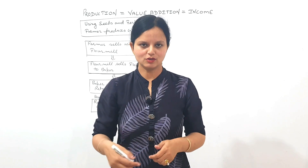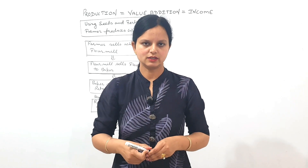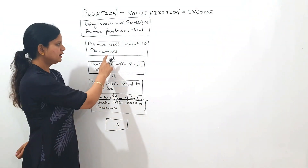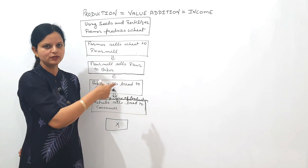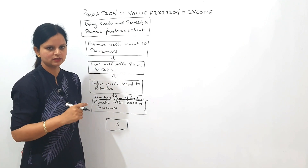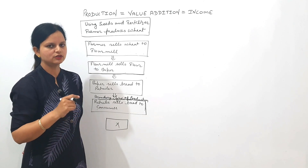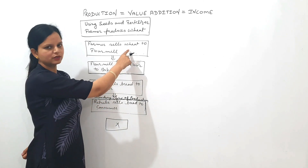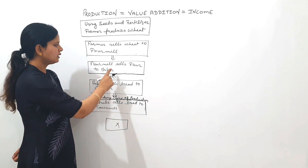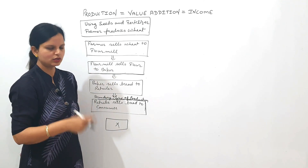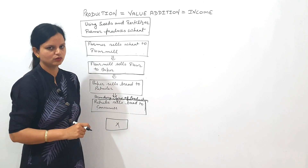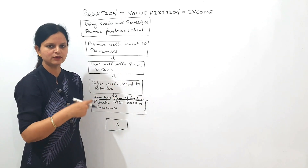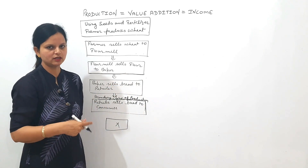Now we will deep dive into the concept of final goods and intermediate goods. A question arises: did the farmer sell all the wheat to the flour mill? The answer is no — he keeps some wheat for self-consumption, and this self-consumption will be deemed as final expenditure. Similarly, did the flour mill sell all the flour to the baker? No — the flour mill keeps some flour for self-consumption, which is deemed as final consumption expenditure.